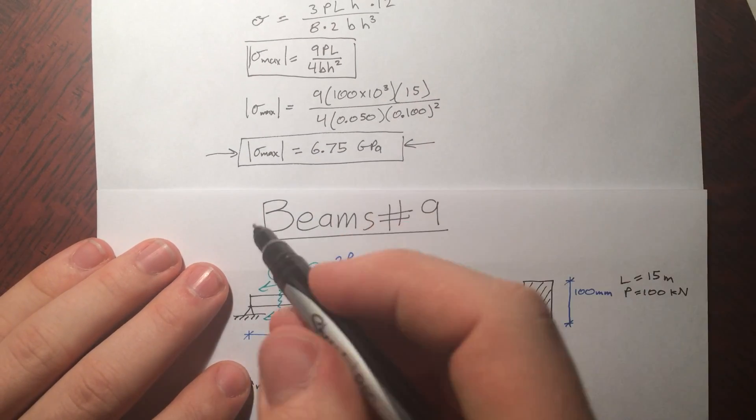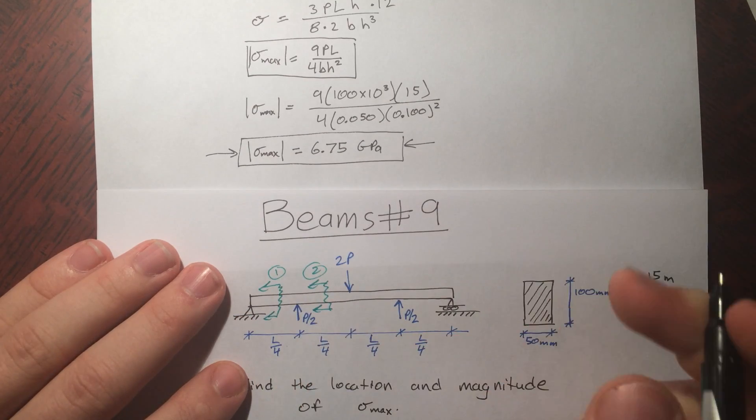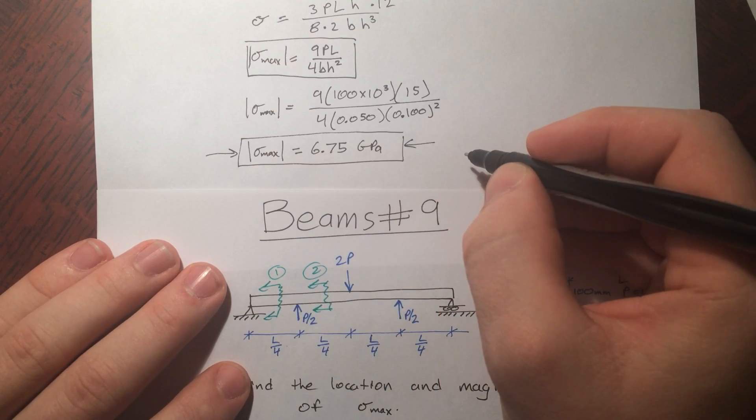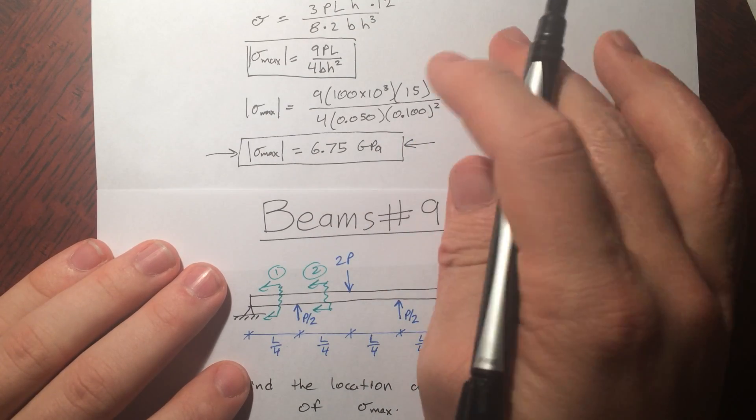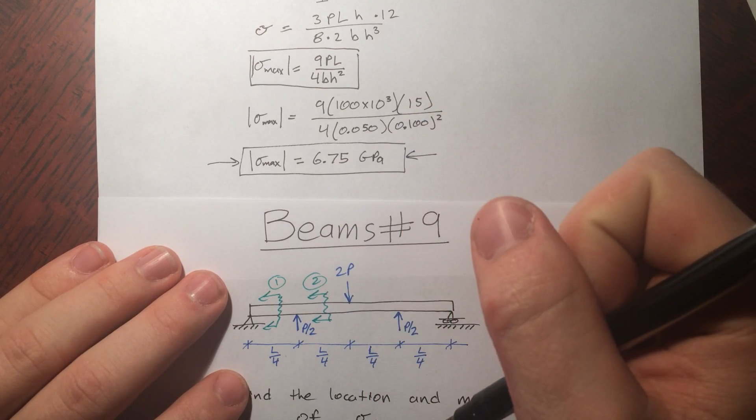There we go, that's the final answer. The greatest magnitude of the stress in this particular beam situation is 6.75 GPa and it occurs at the center of the beam because that's where we took the bending moment from and at the top and bottom of the beam.